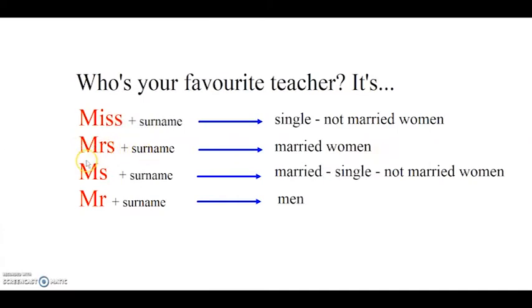And we use Ms for married, single, and not married women. Utilizziamo Ms più il cognome quando non vogliamo specificare o non sappiamo se la persona è singola, sposata, non sposata.